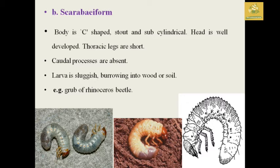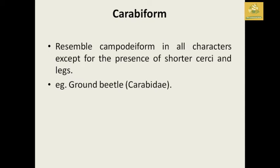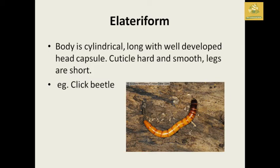In scarabiform larvae, they have a C-shaped, sub-cylindrical body, the head is well developed, thoracic plates are short compared to campodeiform, and cerci are absent. The larvae are sluggish and burrow in wood or soil — for example, the grubs of rhinoceros beetle. In carabiform larvae, they resemble campodeiform in all characters except shorter cerci and legs — example, the ground beetle (Carabidae). In elateriform larvae, the body is cylindrical and elongated with a well-developed head capsule, hard smooth cuticle, and short legs — example, click beetle.